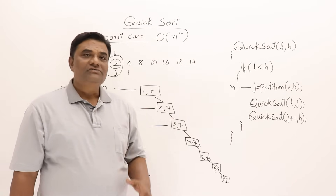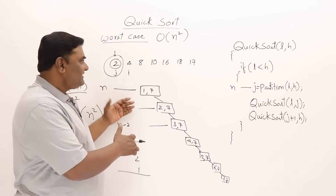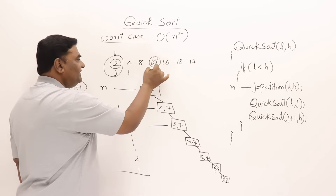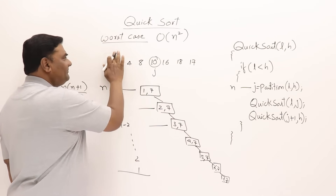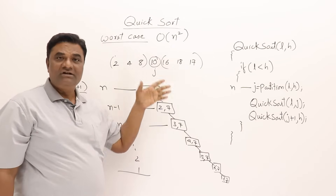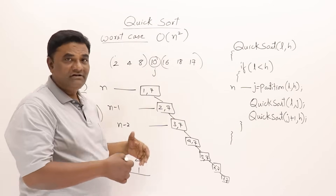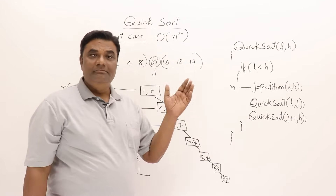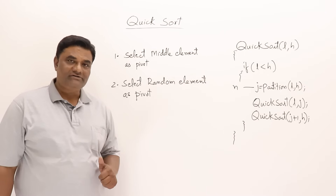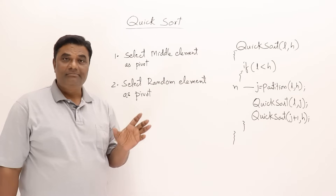To reduce this problem, one suggestion is: don't always select the first element as pivot — instead, select the middle element as pivot. If the list is already sorted and we select the middle element, the partitioning will be done in the middle of the list, dividing it into two equal halves. This converts the worst case from O(n²) to O(n log n). So always selecting the middle element as pivot is one suggestion for removing the worst case.